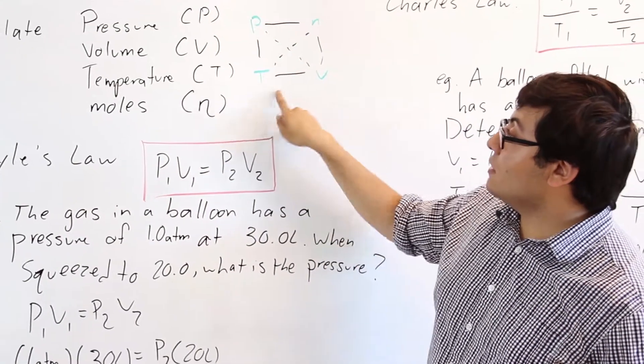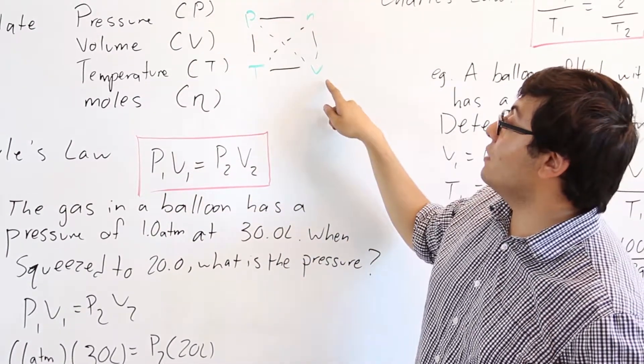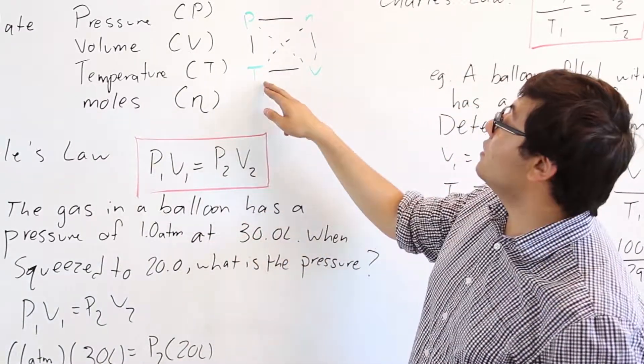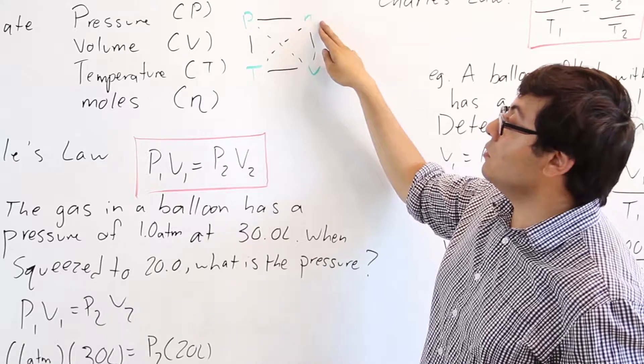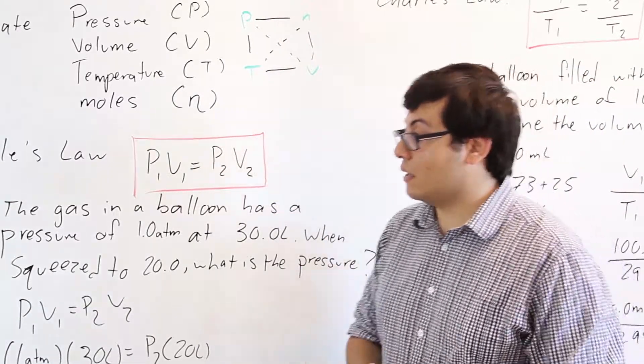The full lines connecting these on the edges are direct relationships, whereas the dotted lines are inverse relationships. So temperature is inversely proportional to moles, and volume and temperature are directly proportional. So we'll get into that in a second.